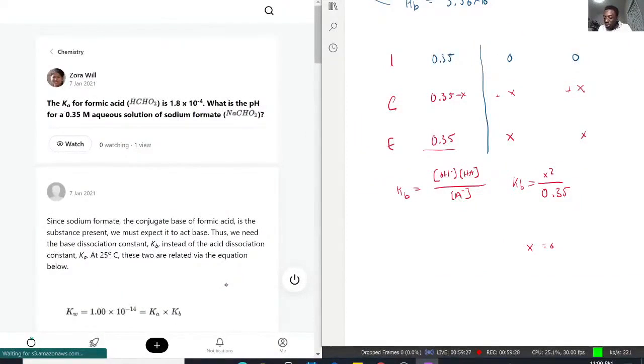X is equal to 4.41 times 10 to a negative 6. That is how much OH is produced. That's how much hydroxide is produced. And that would actually give us our pOH once we do the negative log of that.